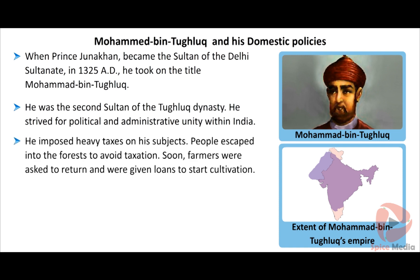He imposed heavy taxes on his subjects. People escaped into the forest to avoid taxation. As a result, there was no one to cultivate the land and there was great scarcity for food. Soon, farmers were asked to return and were given loans to start cultivation. Irrigation was improved, yet the people suffered immensely.